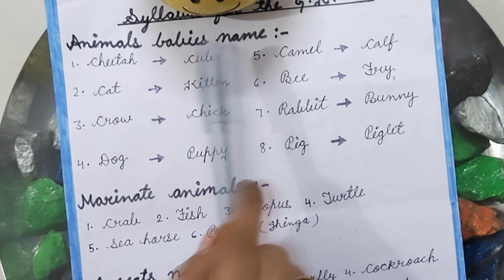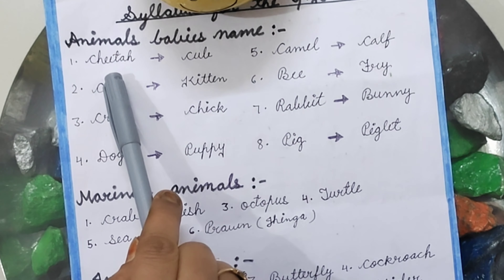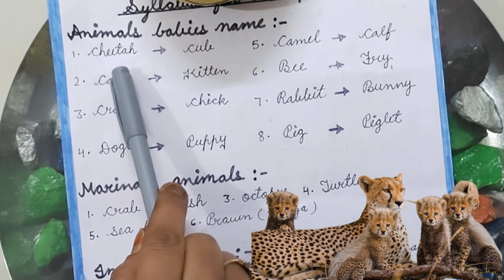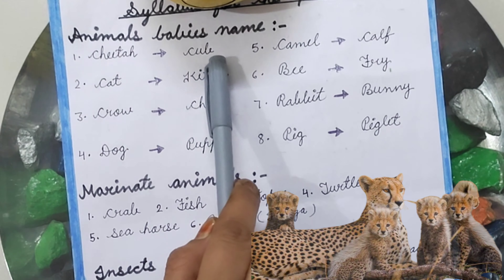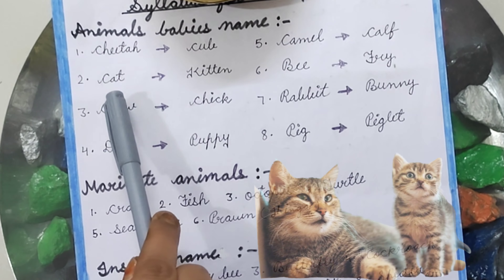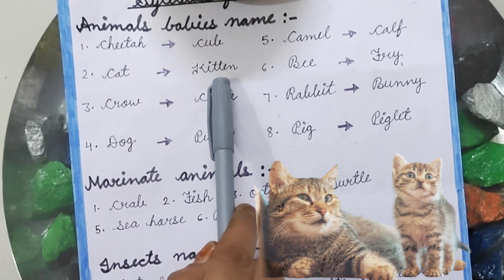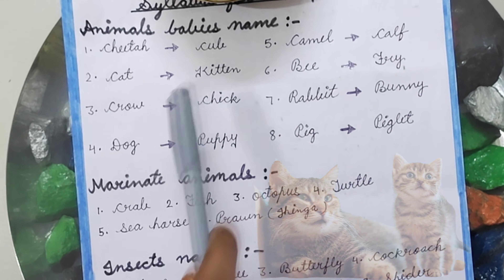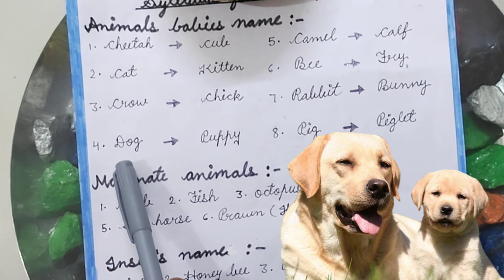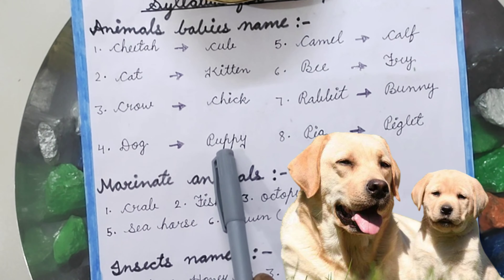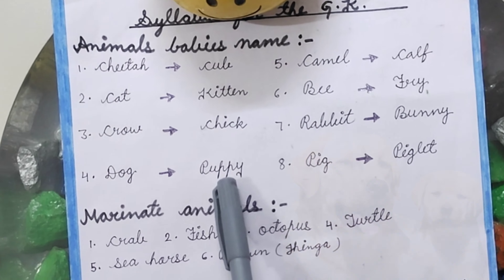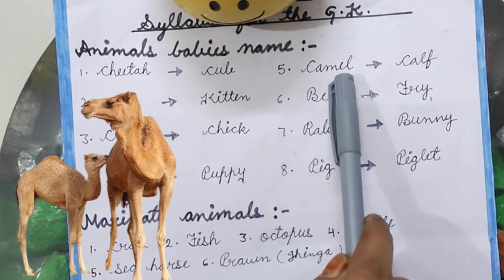Animals Baby Names. Cheetah — Cub. Cat — Kitten. Croc — Chick. Dog — Puppy. Camel — Calf.